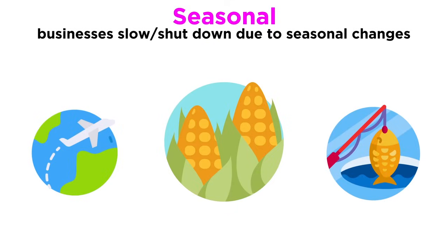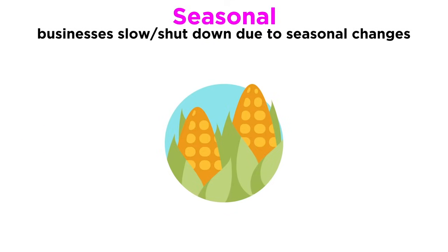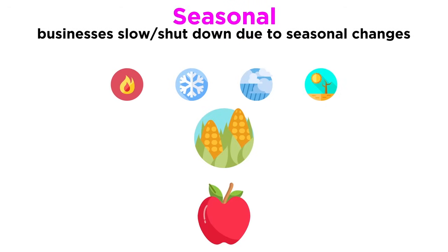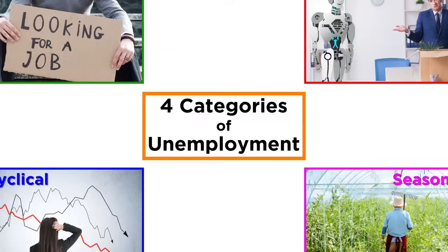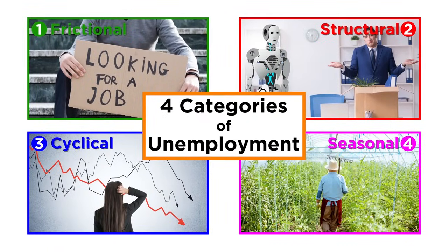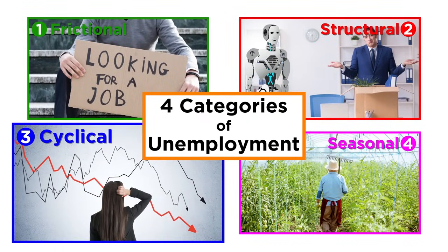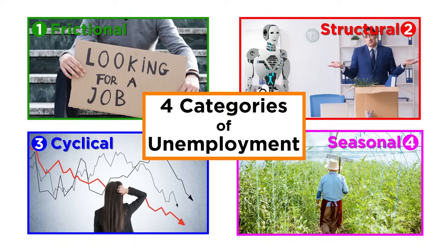And seasons are not always predictable. Heat, cold, rain, and drought can alter harvest schedules by causing fruits and vegetables to ripen sooner or later than expected. So that's a quick introduction to the four types of unemployment: frictional, structural, cyclical, and seasonal.